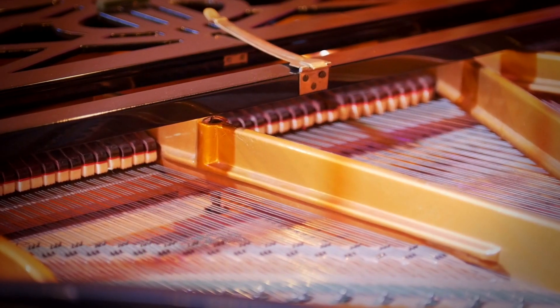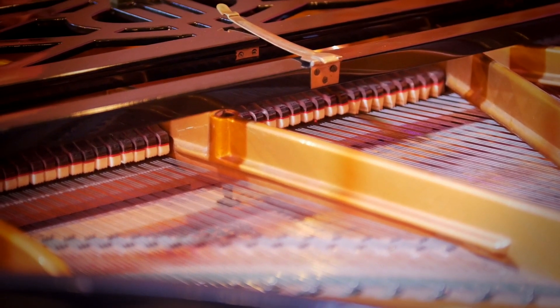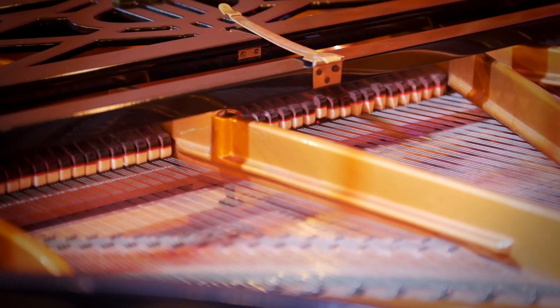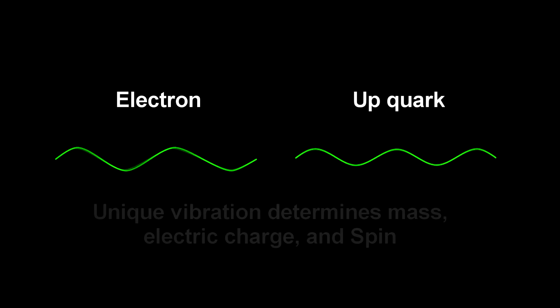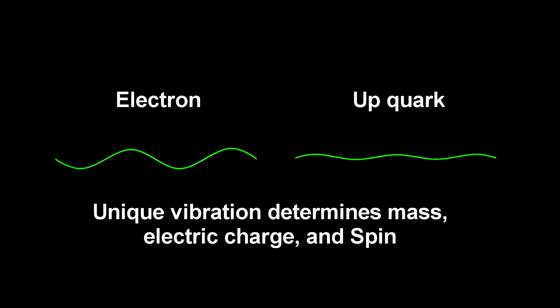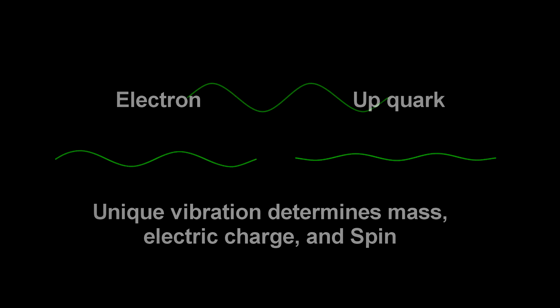Like different vibrations of piano strings create different notes, according to string theory, one vibration may result in an electron, another may result in an up quark, and so forth. In fact, the unique vibrations of these strings determine the mass, electric charge, and spin of all elementary particles. And it so happens that in one of its vibrations,